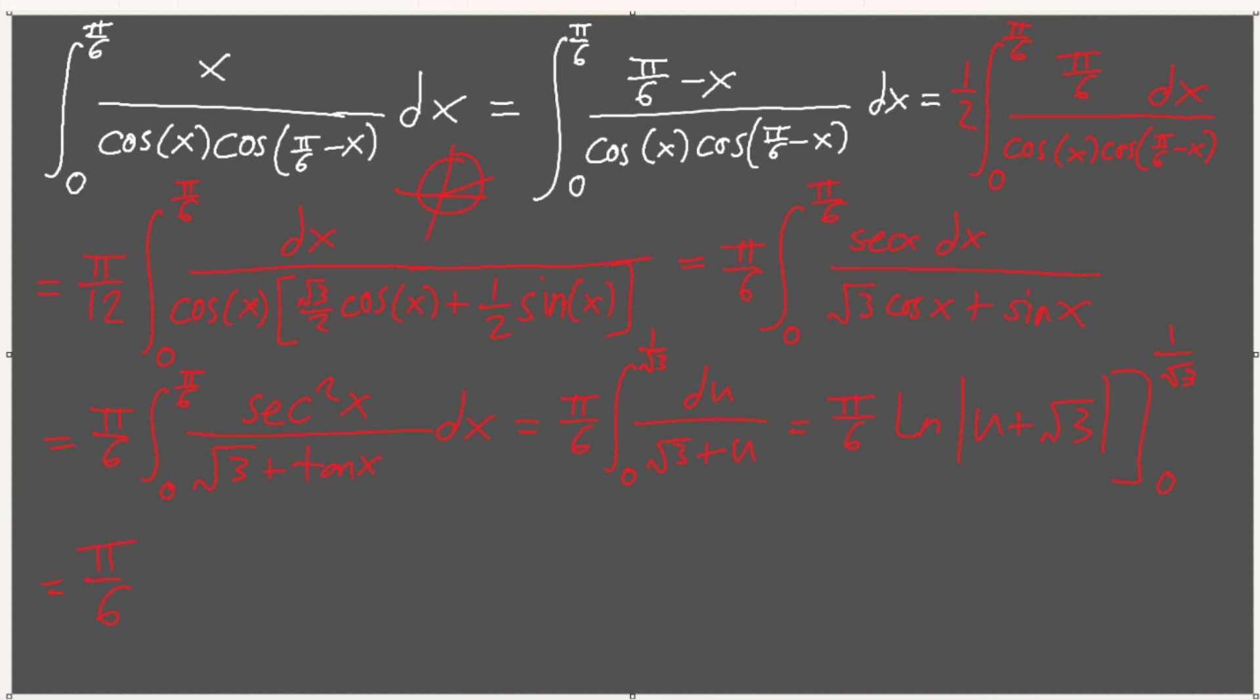So what we have now is we have 1 over root 3 plus root 3 over root 3, technically. This is technically what we have. We can simplify this by multiplying square root of 3 to top and bottom. We get 1 plus, this is very ironic, wow. We get 4 thirds. So I guess our answer is pi over 6 ln of 4 thirds. I believe this is our answer. Okay.